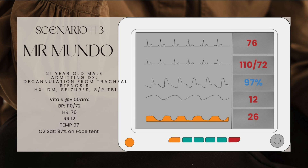Moving on to scenario number three. Mr. Mundo is a 21-year-old male admitted for decannulation with reanastomosis from tracheal stenosis. Head and neck surgery are following the patient. Medical history includes diabetes, seizures, and status post traumatic brain injury from a motorcycle accident one year ago, after which he has been unable to communicate. The plan is to decannulate to help the patient restore and initiate speech with aggressive speech therapy. At 8am vitals are: blood pressure 110 over 72, heart rate 76, respiratory rate 12, oxygen saturation 97% on a face tent with humidifier at 15 liters per minute, temperature 97.